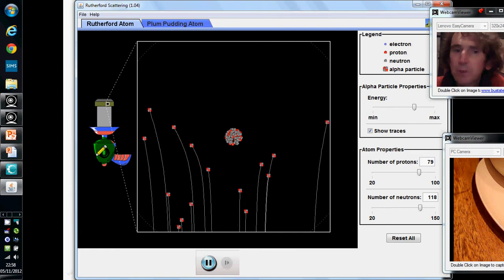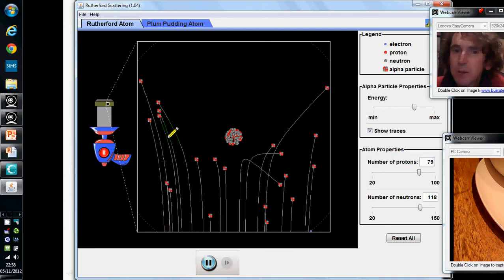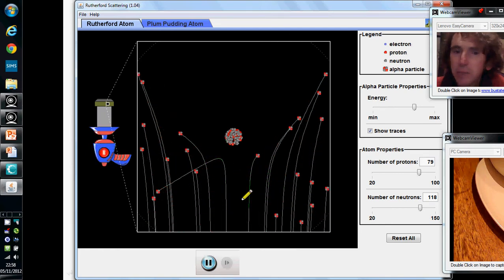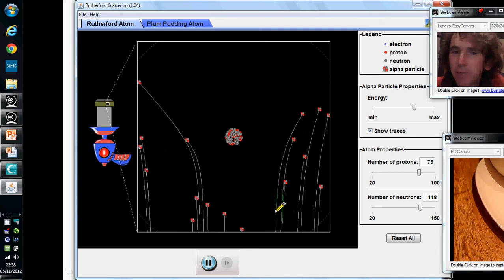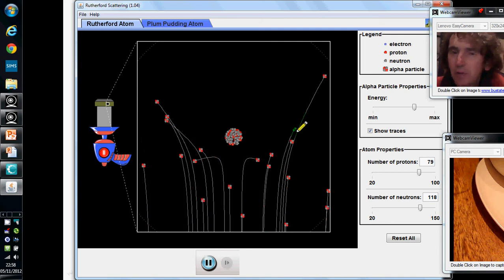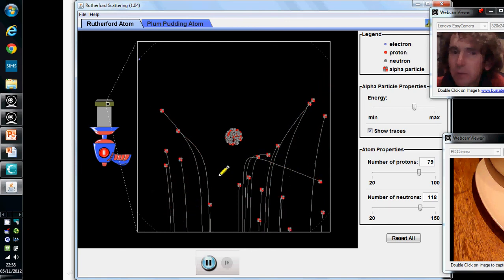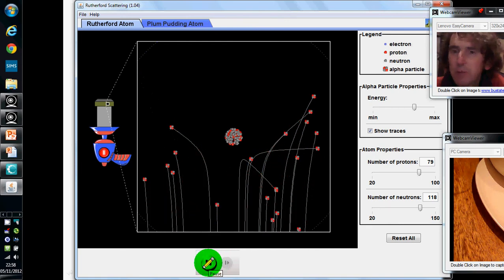He discovered that as well as most of them going straight through, some of them, look at these ones here, bent right back. So most of them were deflected not at all, or a small amount, but some of them came right back at him. And that was a big surprise.